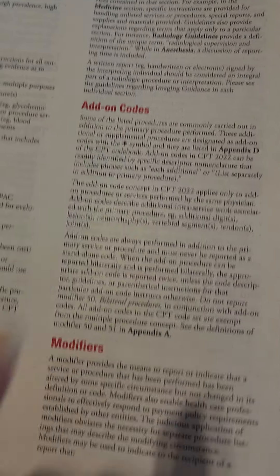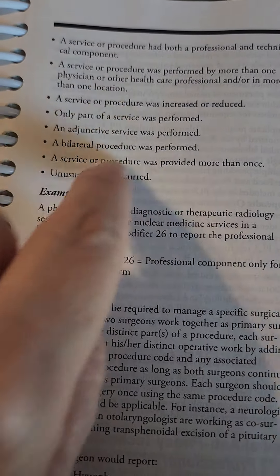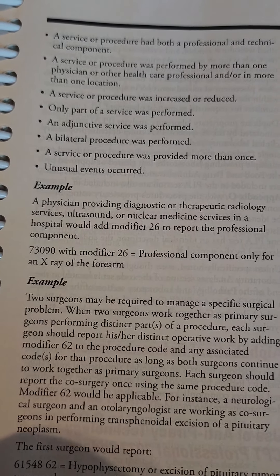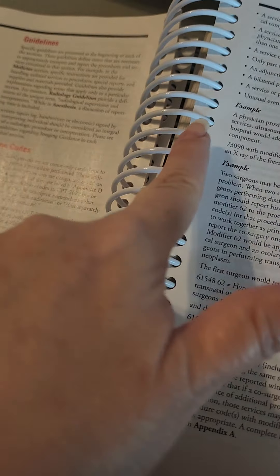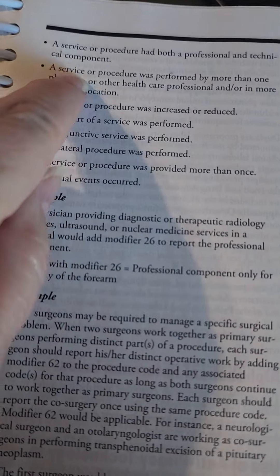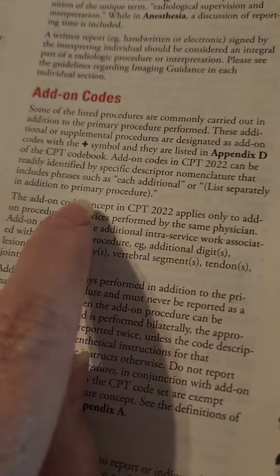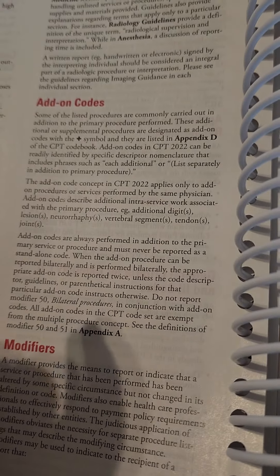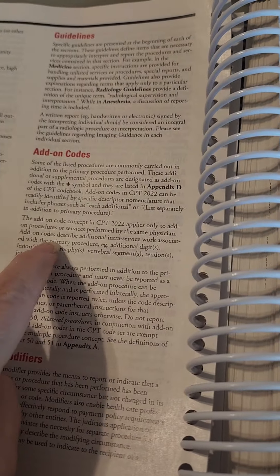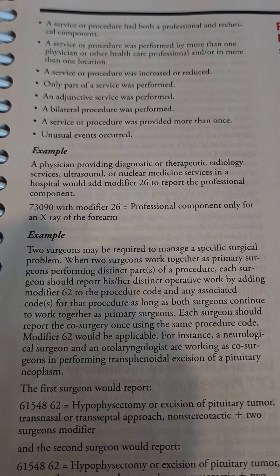The next page covers the difference between add-on codes and modifiers, and the specific points you need to know are right here in these bullet points. There's usually a question on the medical coding exam about which is or isn't an add-on code or modifier. When you find something listed that is not under 'what is an add-on code,' that's usually your answer. Know where this paragraph and these bullet points are.